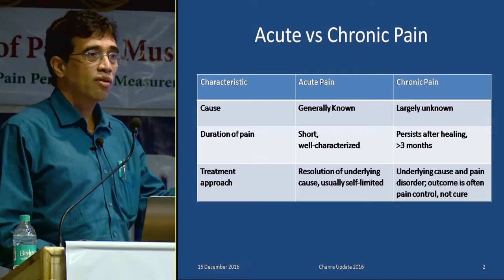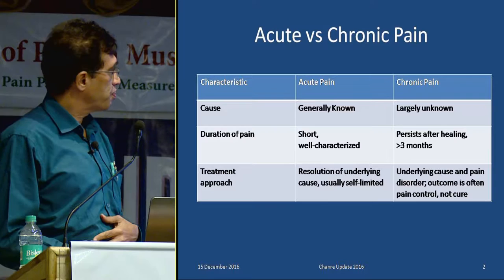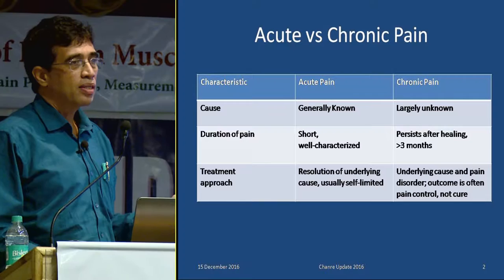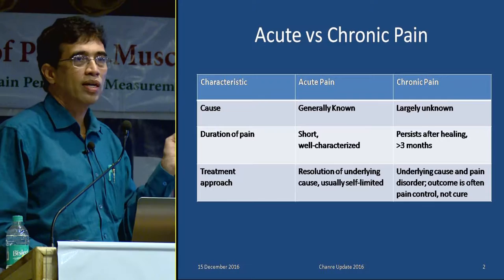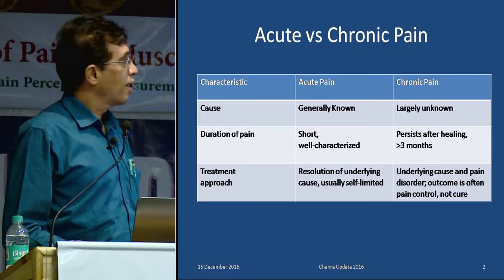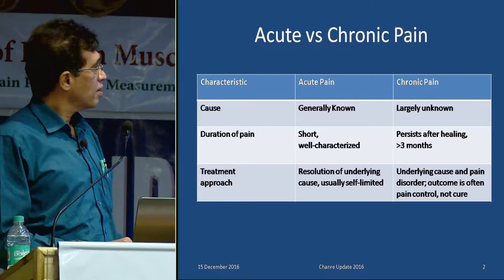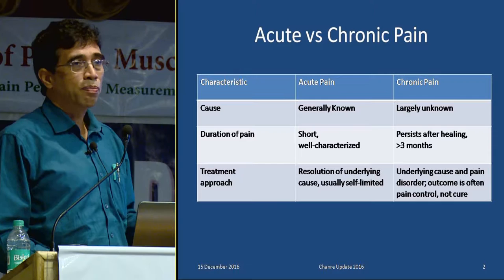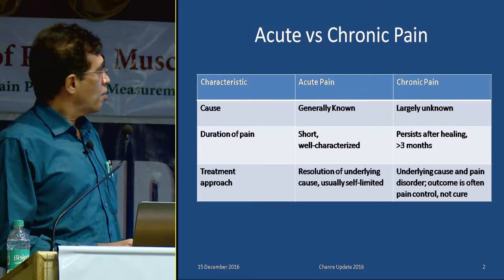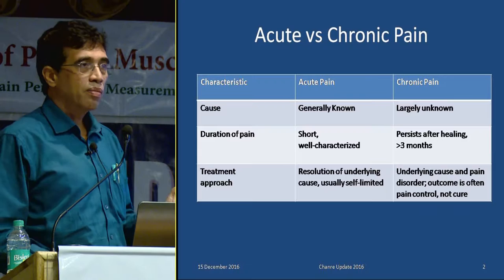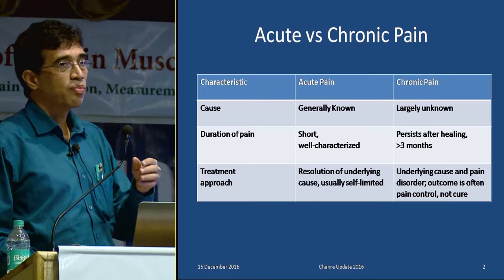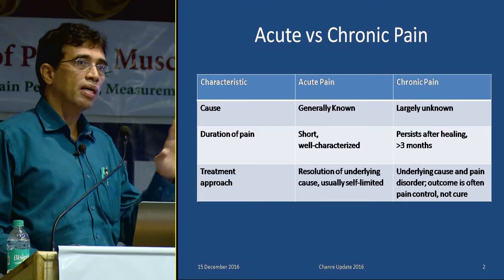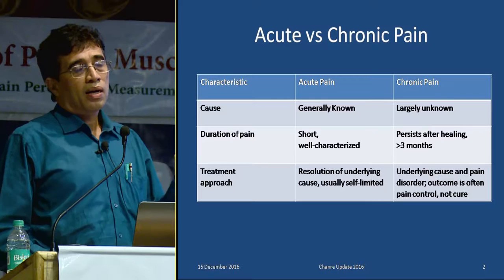In chronic pain, it generally persists even after healing. Surgery is done, sutures have healed, yet the pain doesn't go away. Most of the time it lasts more than three months. In acute pain, treatment is simple — you open an abscess, pus comes out, pain is gone. With chronic pain, even identifying the underlying cause is difficult, and even if you deal with it, the pain may not go. So we may have to treat pain as pain itself. Outcome is often incomplete; we can manage the pain but rarely cure it.